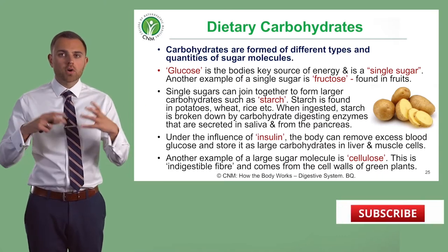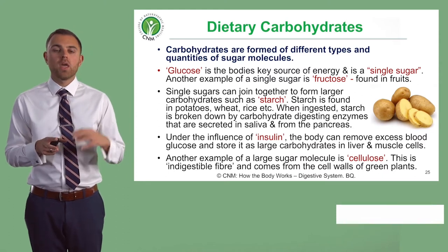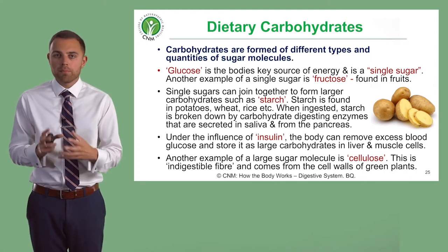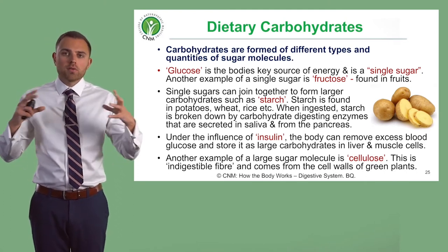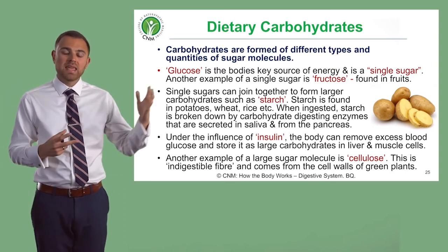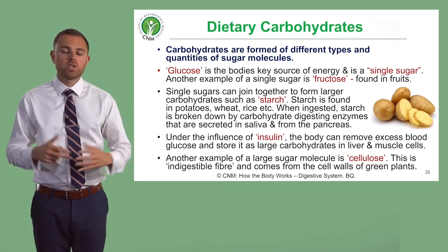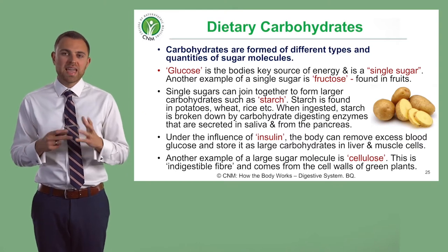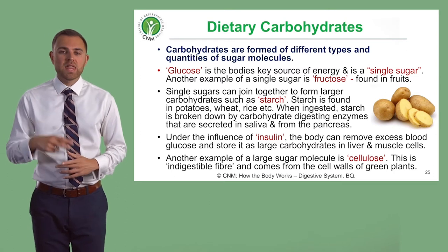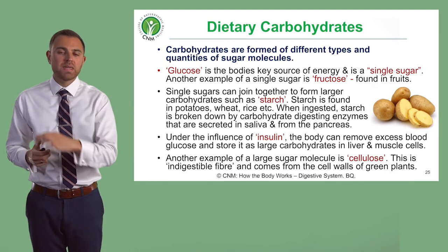Carbohydrates are formed of different types and also quantities of sugar units. Glucose is the body's main source of energy typically — it is a simple sugar. Glucose joins up together to create very large units, and ultimately we can think about starch, which is basically just a huge structure. Starch can contain roughly about 500 glucose units stuck together. Think back to that analogy of Lego: starch is the Lego block, and the individual pieces are glucose.